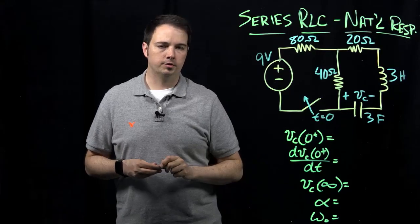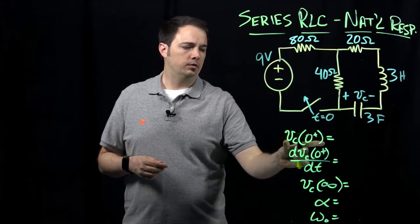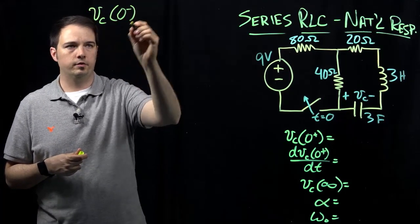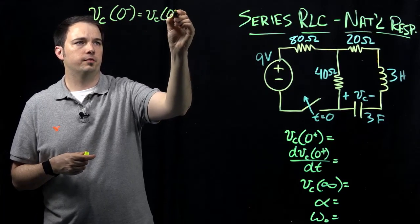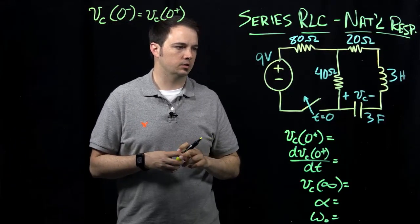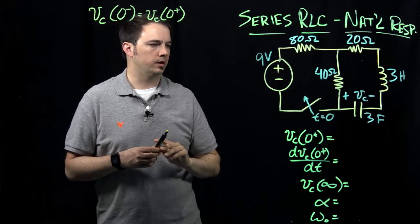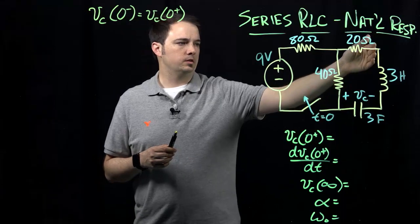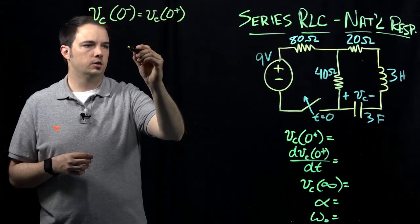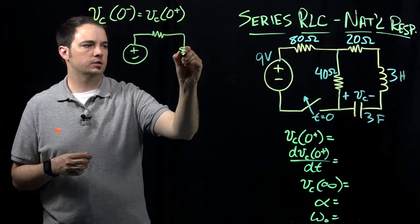Let's start by evaluating the initial voltage on the capacitor. We know that in a capacitor, if we can determine what the voltage is before the event, that has to be the same as the voltage after the event, because the voltage in a capacitor cannot change instantaneously. So if we're at steady state with the switch still in the closed position, we know that the inductor is acting as a short circuit and the capacitor is acting as an open circuit.